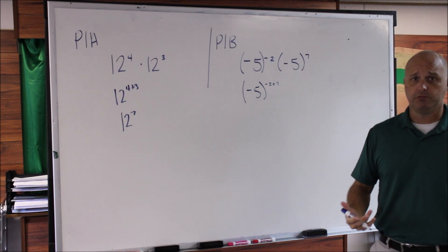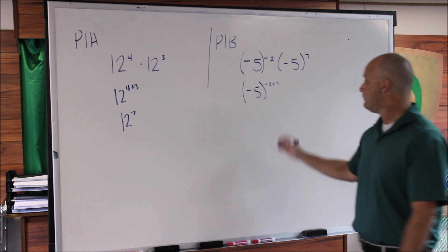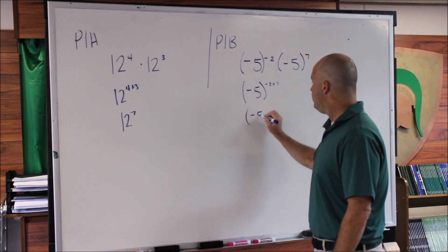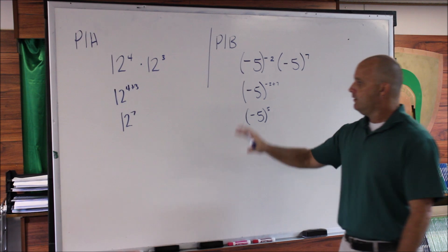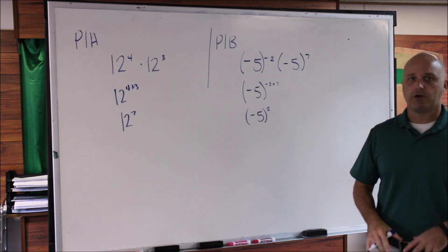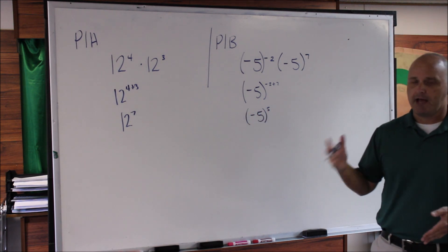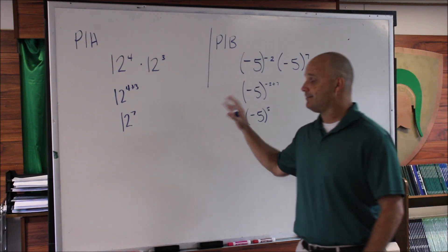What's -2 + 7? Or 7 - 2, it's 5. So we get (-5)^5. The instructions were just to write these as a single base with one exponent. So you don't have to actually solve these. You're going to leave them as they are.